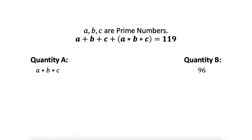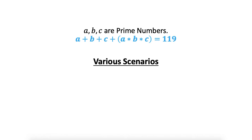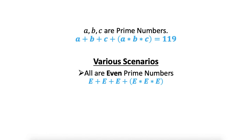Now let's return to the question. a, b, c are prime numbers and the condition is a plus b plus c plus the product of all three equals 119. We should note that the only even prime number is 2; all other prime numbers are odd. Now let's consider various scenarios. If all three are even: even plus even plus even plus the product of all evens gives an even result. But our answer 119 is odd, so this scenario is not possible.